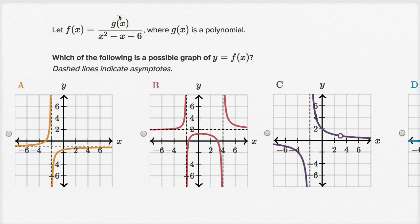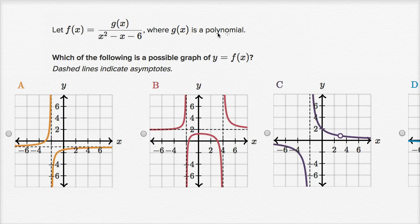So this is interesting. They don't give us a lot of information about f of x. We don't know what the numerator is — we just know that it is a polynomial. But they do give us the denominator, and so we can think about what are the interesting x values for the denominator — in particular, what x values will make the denominator equal to zero. And to do that, we can factor the denominator.